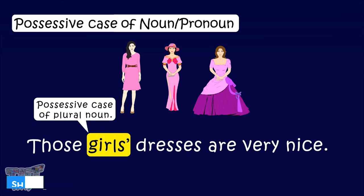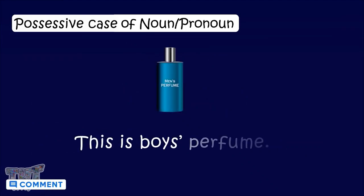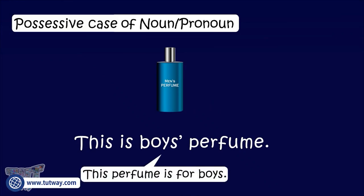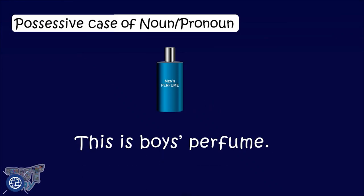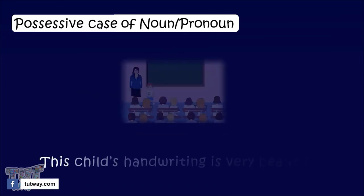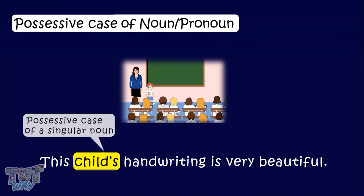Let's have more examples of possessive cases of plural nouns. This is boys' perfume. This means that this perfume is for boys. Here, 'boys'' is the possessive case of a plural noun. This child's handwriting is very beautiful. Here, the word 'child's' is a possessive case of a singular noun.